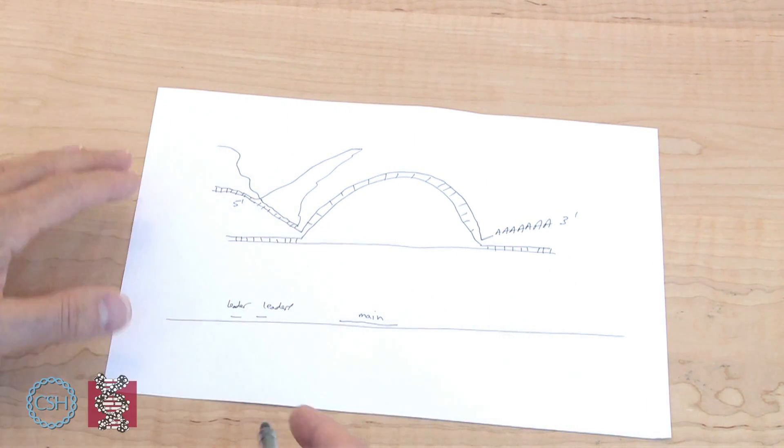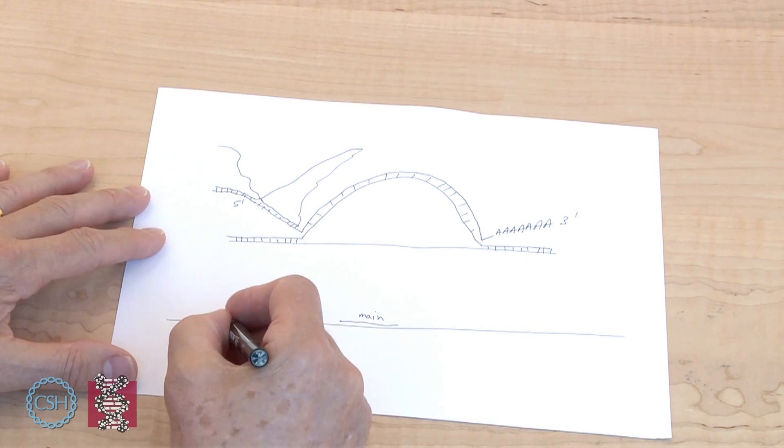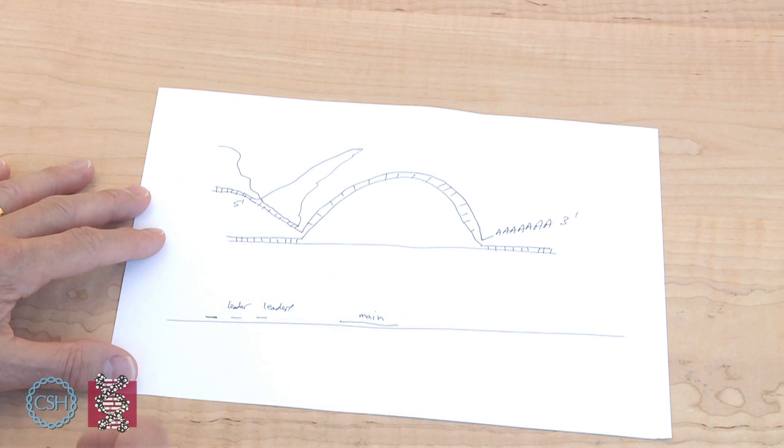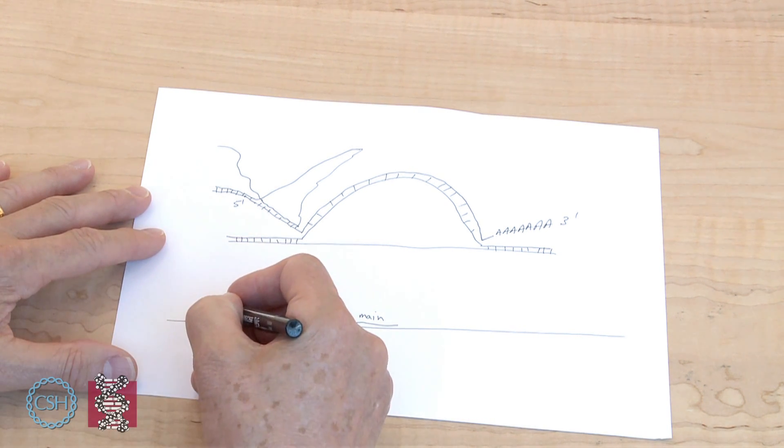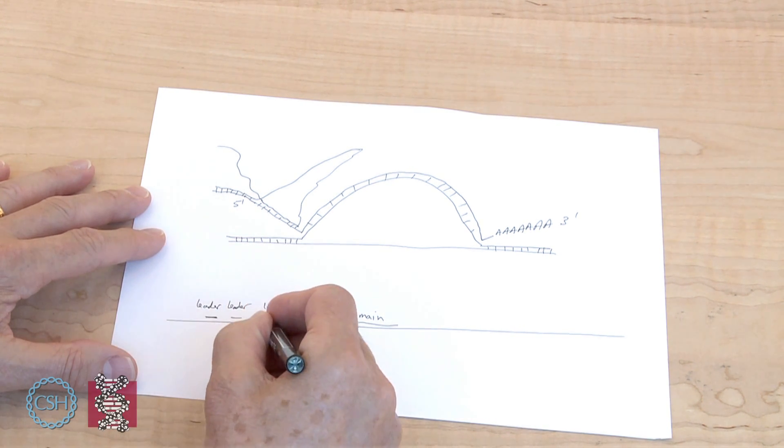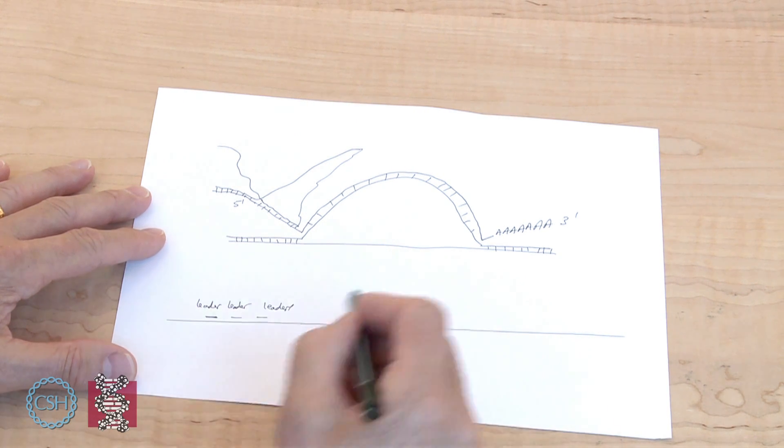And so then when we started to map these a little bit further, we found that, in fact, there was one additional leader. So that they're, in fact, a tripartite leader that got joined to this gene.